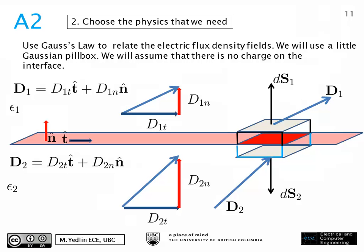In this slide, we can see that we've introduced a pillbox for a Gaussian surface. We're going to compute the electric flux density fields through the surface of this pillbox. We pick the pillbox so that its sides are very small, so all the flux is going to come out of the gray top and bottom. Therefore, we're just going to have to take dot products with DS1 and D1, and DS2 and D2, making sure of the signs of the area elements. In this case there is no contained charge.